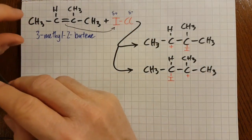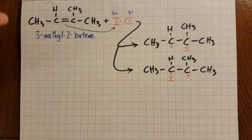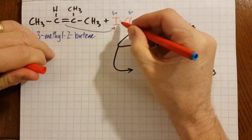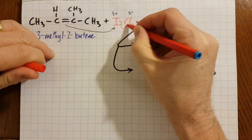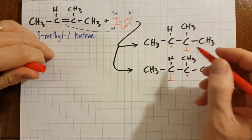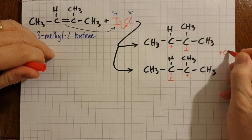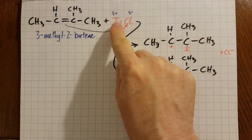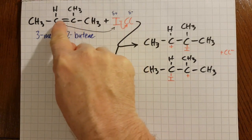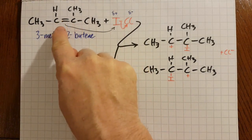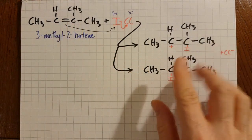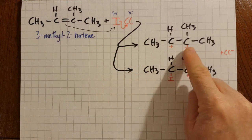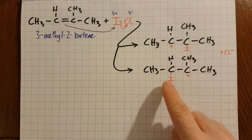This pi bond here grabs onto the I+ and those two electrons move onto the chlorine to make it chloride. As the I+ is dragged over, it breaks the double bond here to make it a single bond. You've got a choice: you can have the plus here and the I there, or the I there and the plus there.